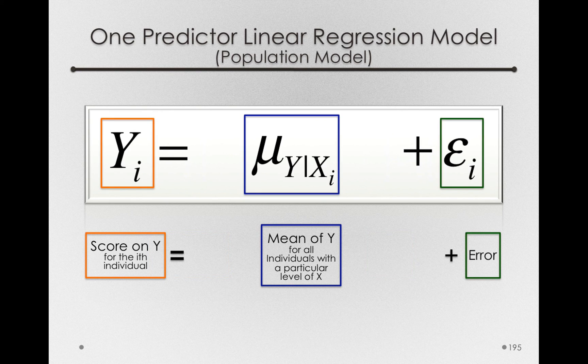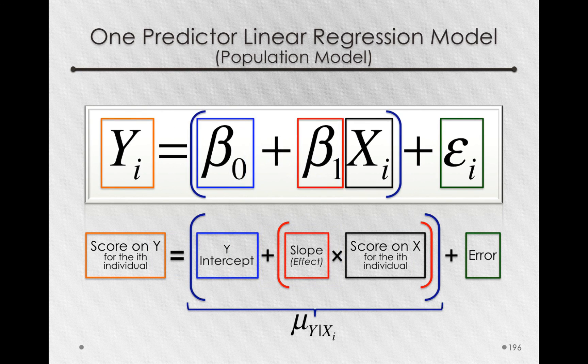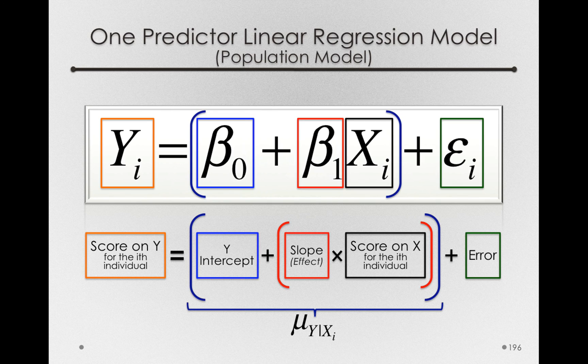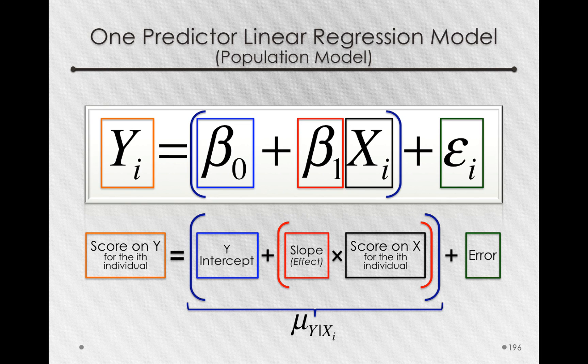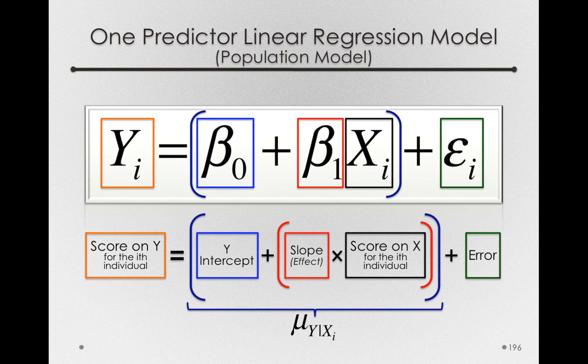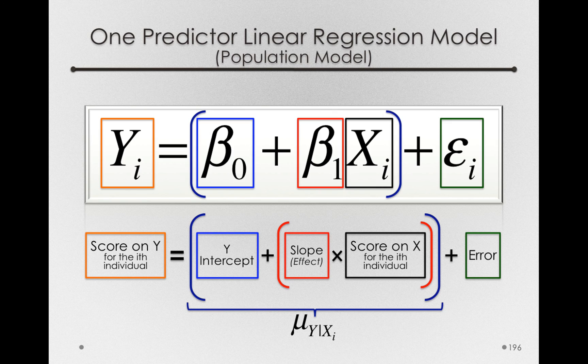So we represent this mean in the center on the basis of our regression function. So with only two parameters, a beta 0 and a beta 1, we're able to talk about the mean on y for any individuals at a particular level of x. Because the conditional means have a relation, we only need to spend two parameters and we're able to talk about the mean for any group of people at a particular level of x.